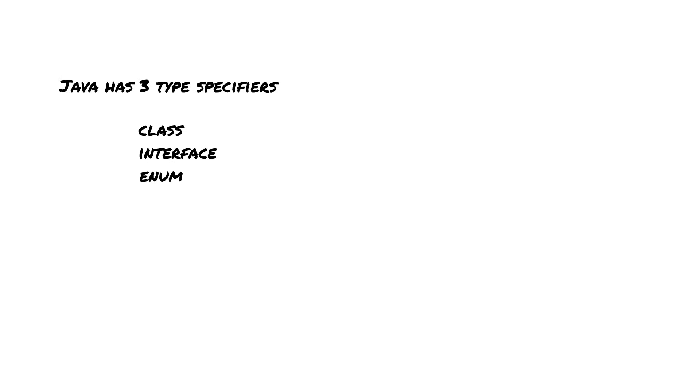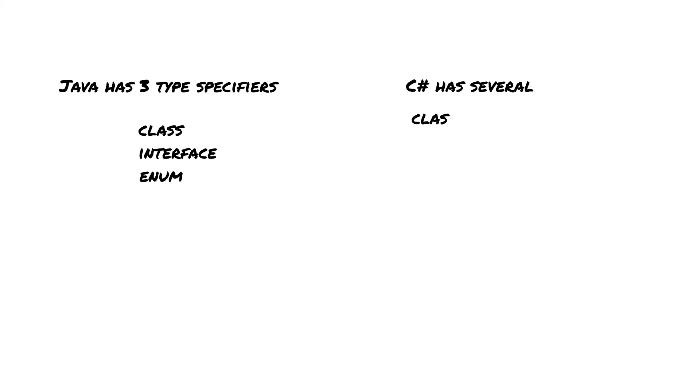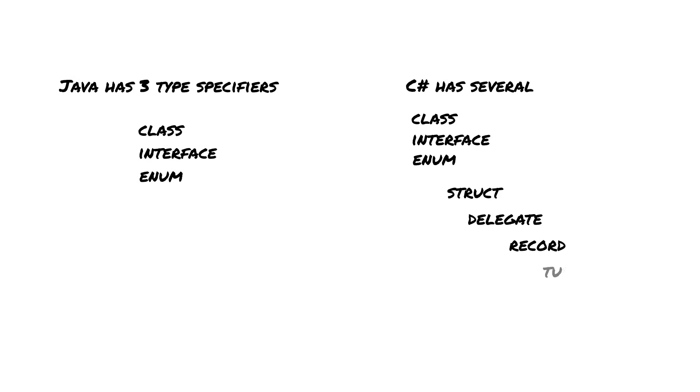Speaking of type specifiers, Java has three: class, enum, and interface. C# has several — it has class, interface, enum, and also struct, record, delegate, and an implicit dynamic type — basically a tuple. Java supports the concepts of record and tuple, but again it's done via classes. Value and reference type semantics in Java is fixed — the primitives are value types, classes are reference types, and there's no changing that. In C#, you can choose whether a value type is passed by reference or by value, and you can define value types using struct and reference types using class.